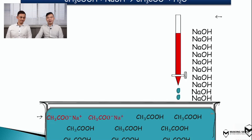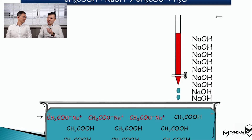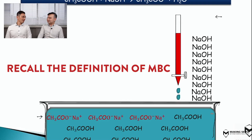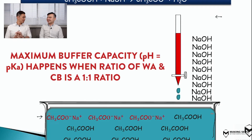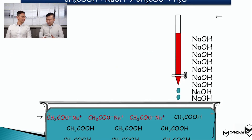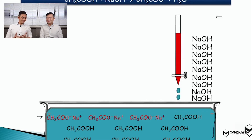If you continue to add more NaOH, it will disappear and more and more salt will be produced. Now, there is this concept called maximum buffer capacity — can you remind me under what scenario this happens? When the ratio of the weak acid and the salt is in a 1:1 ratio, we will have achieved maximum buffering capacity. So that means equal amounts of both the acid and the salt. At this point, with 3 moles of salt and 7 moles of weak acid, we are not at the 1:1 ratio, so I don't expect maximum buffer capacity just yet.